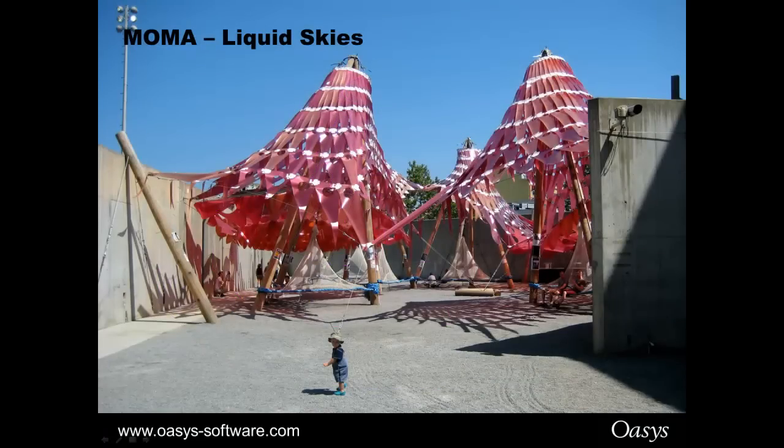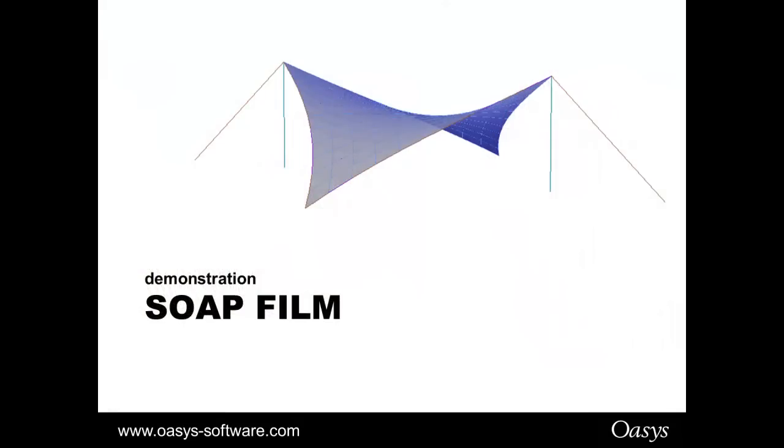Here we have an unusual example. This is a conic structure from the Museum of Modern Art in New York exhibition Liquid Skies. This is actually a mylar conic fabric and you can see the edge cables and the supporting struts and what appears to be a toddler acting as ballast down the corner, hope the wind doesn't blow. So how do you go about doing a soap film, let me change over to GSA now.